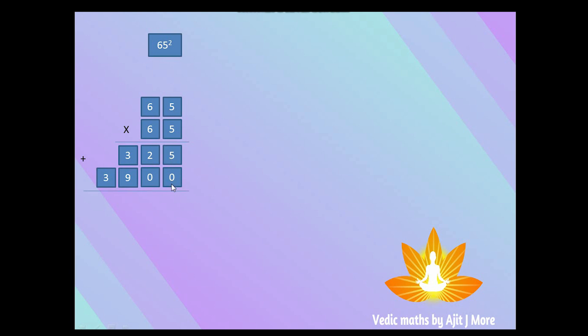Now add the two rows in the corresponding columns: 5+0=5, 2+0=2, 3+9=12 — write 2 and carry 1, then 1+3=4. So the answer is 4,225. By seeing this technique you might have realized it is taking more time.